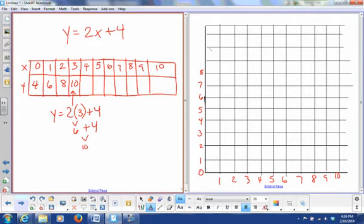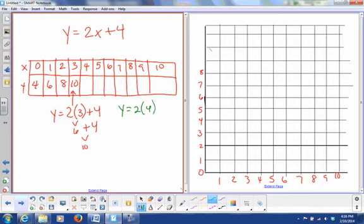All right, so let's do this for the next one. Okay, so we've got y equals 2 times 4 plus 4. Okay, 2 times 4 is 8, plus 4 is 12. So my number here is going to go 12.